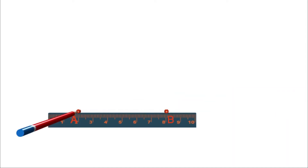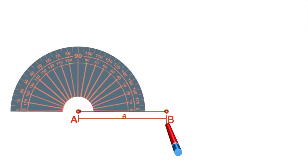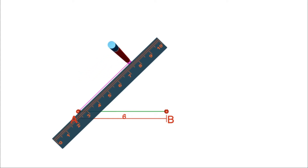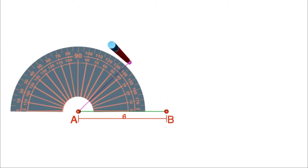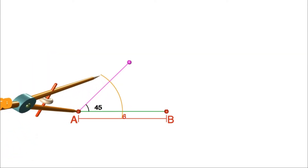First, let us draw the line AB of length 6 cm. We need angle A equal to 22 and a half degrees, but we cannot draw 22 and a half degrees using a protractor. So double it and make an angle of 45 degrees at A. It is enough to draw the bisector of this angle to get 22 and a half degrees.